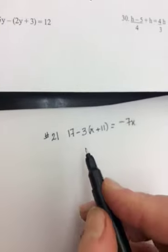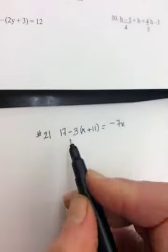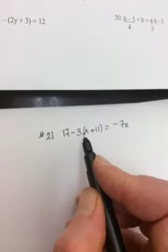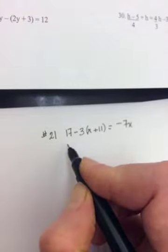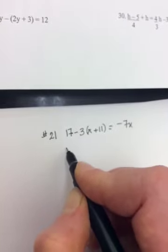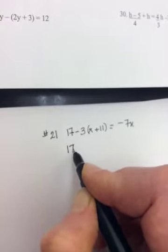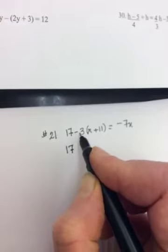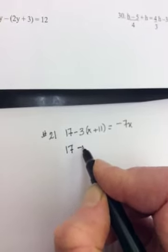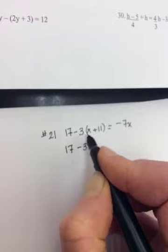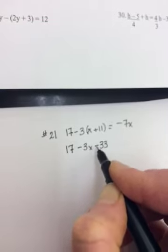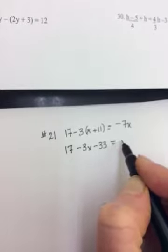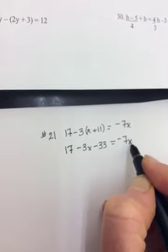All right, the next one that is similar is number 21. So again, there's a bracket, and this time it's a negative 3 in front. So you're going to do exactly the same thing. And sorry, I always cross my 7s. It's a French thing. So it will be 17 minus 3 times x will be minus 3x, and negative 3 times 11 will be negative 33. And usually it's the negative on the 33 that people screw up on. So just double check that.